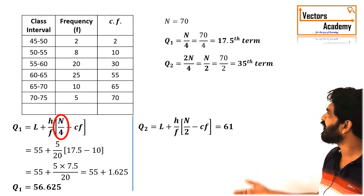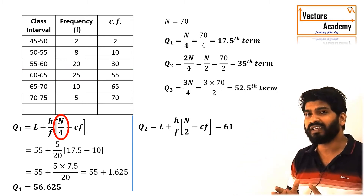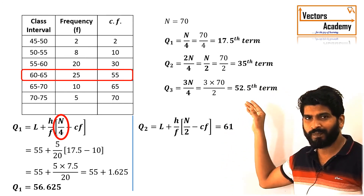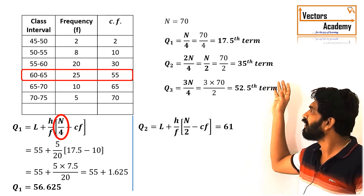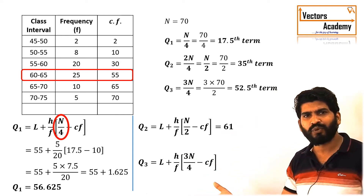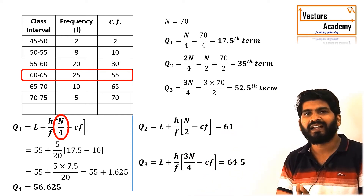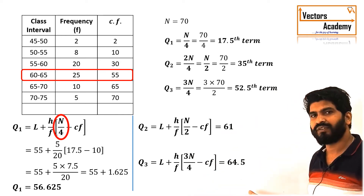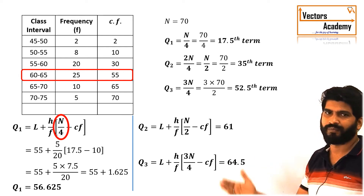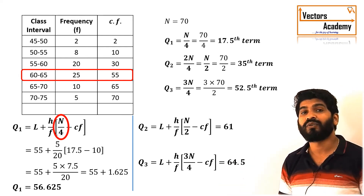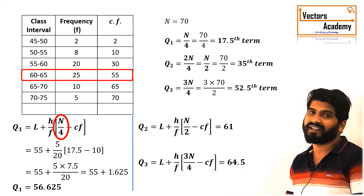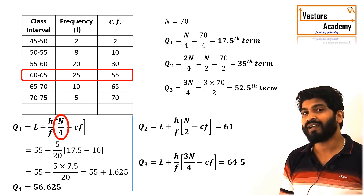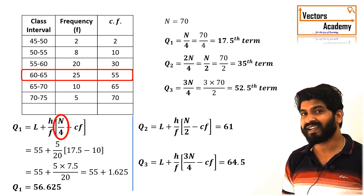In exactly the same way, for calculating Q3 we need to calculate 3n/4, follow the same process, and we get the value of Q3 as 64.5. So this is how all three quartiles are calculated.